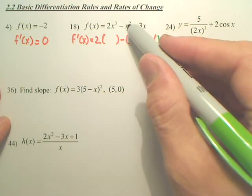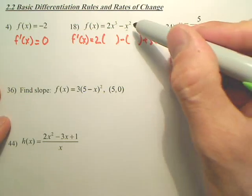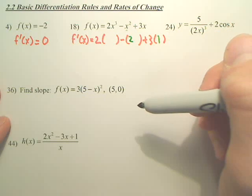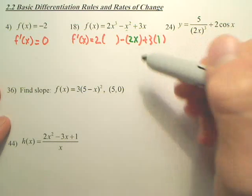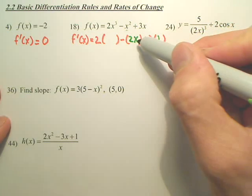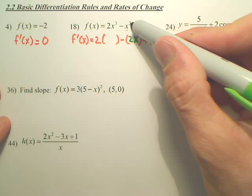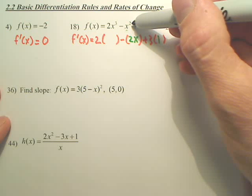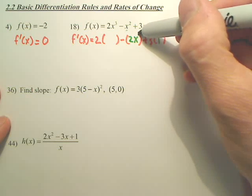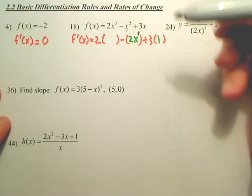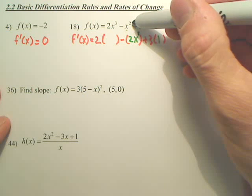The derivative of x squared is simple: take the power 2, put it out front, and write x — which is really x to the first, because you decrease the exponent by 1. So the 2 comes in front and the exponent drops from 2 to 1.